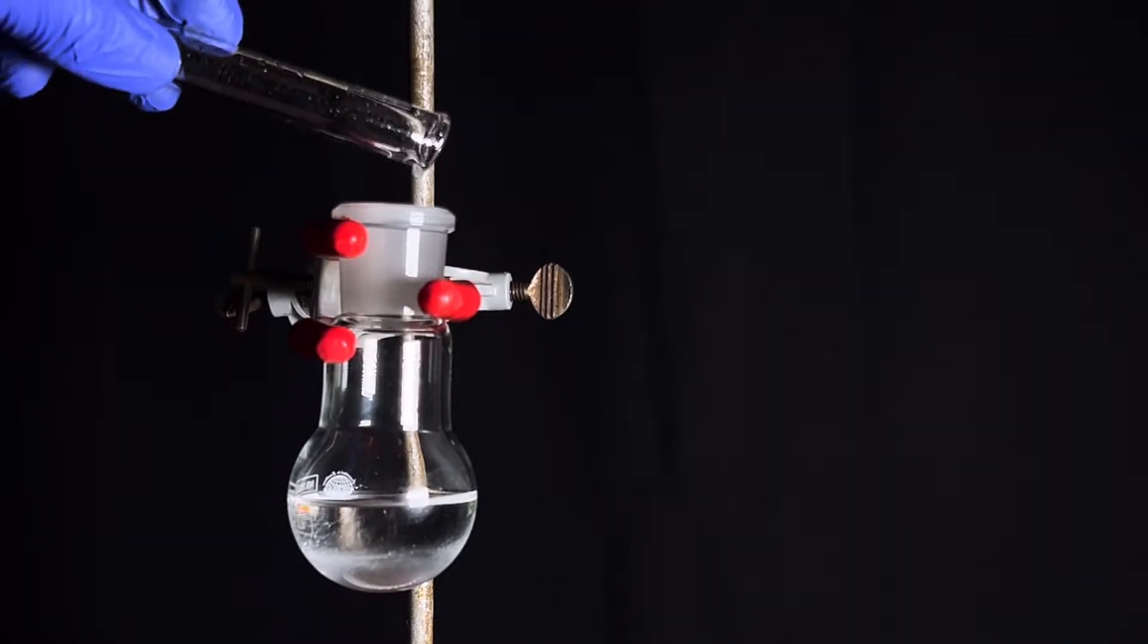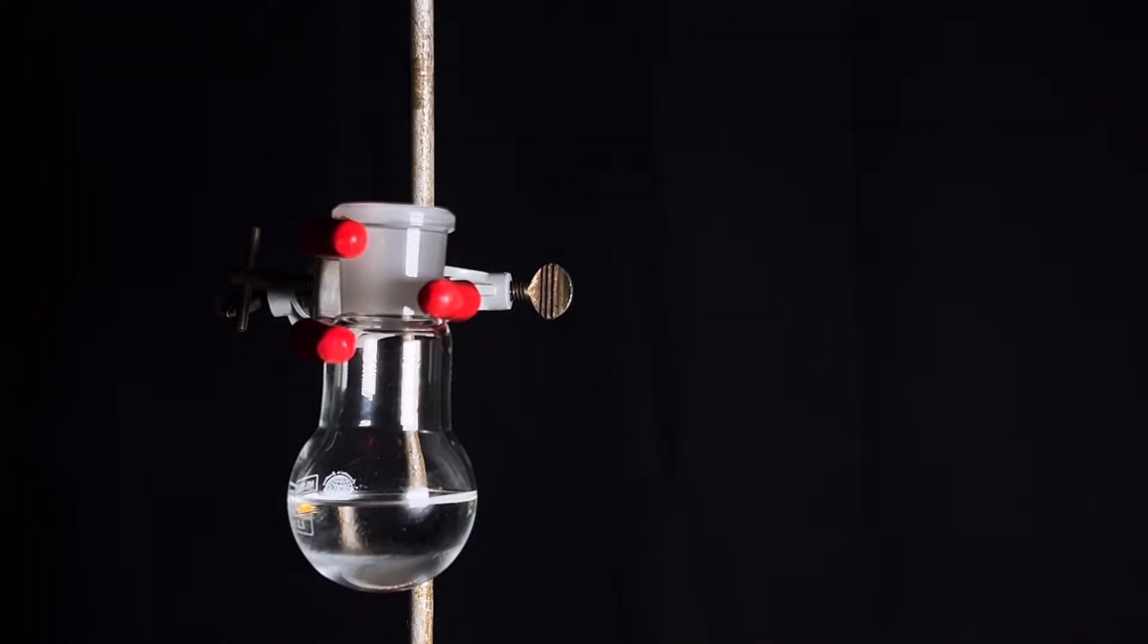You can also use concentrated 98% sulphuric acid instead of the phosphoric acid. A magnetic stirring bar was then added into it.